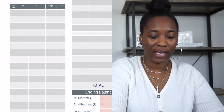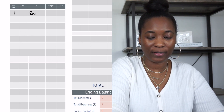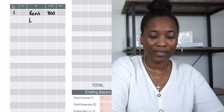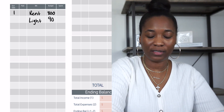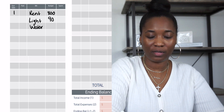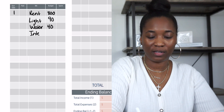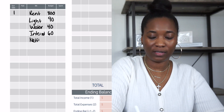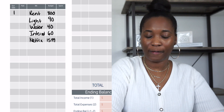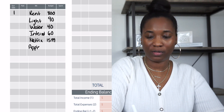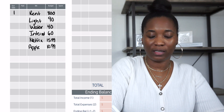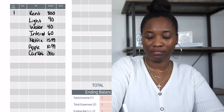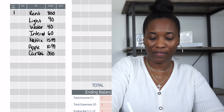Jesse makes $2,500 a month and has no extra income as of yet — he might need some, we'll see when we break it down. So we're going to zoom in and start writing in our monthly expenses. Jesse has rent due on the first, which is $800. His light bill is $90, his water bill is $40, and internet is $60.